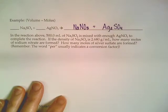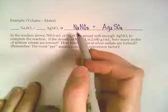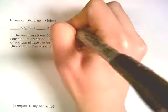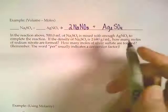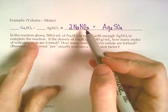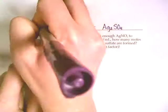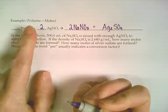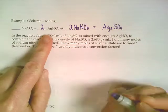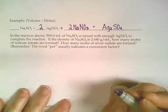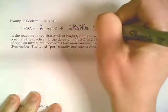Then we need to balance this overall. We've got two sodiums on the left and only one on the right, so we'd need a big 2 here. That would give us two nitrates, so we need two nitrates on the left, put a big 2 there. Now we have two silvers, but that's okay because we have two silvers on this side as well.